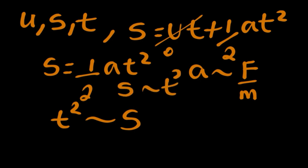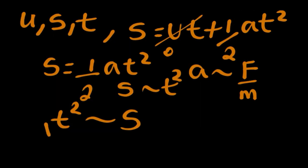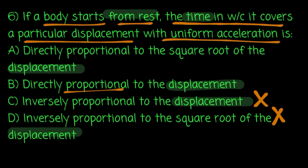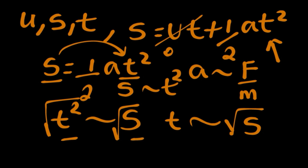Time squared is directly proportional to s. So time is the square root of s — time is directly proportional to the square root of the displacement. The square root of displacement is directly proportional to time.